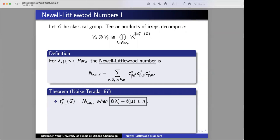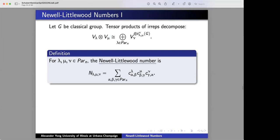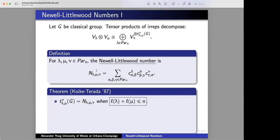Klyachko and Terada prove the following things. Let me go back. What is the relationship between T and N? The first point is that they are not equal in general. They're absolutely not equal in general. However, what Klyachko and Terada showed in 1987 is that they are equal under a hypothesis.